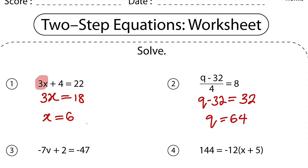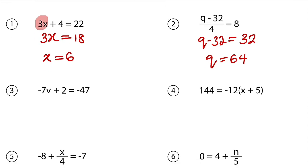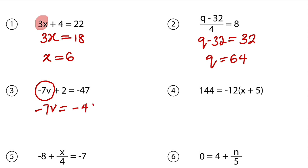So q is equal to 64. You see that? Just two steps. Question number 3. We have negative 7v plus 2 equals negative 47. You need to ask yourself, what can you add to positive 2 to get negative 47? It is definitely negative 49. Therefore, negative 7v must be equal to negative 49.